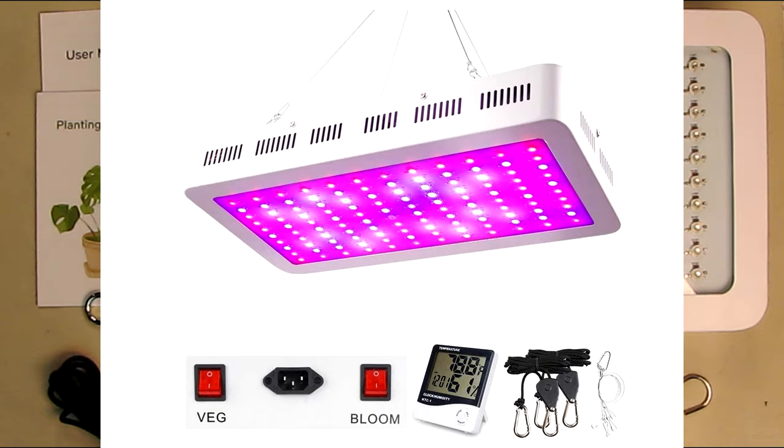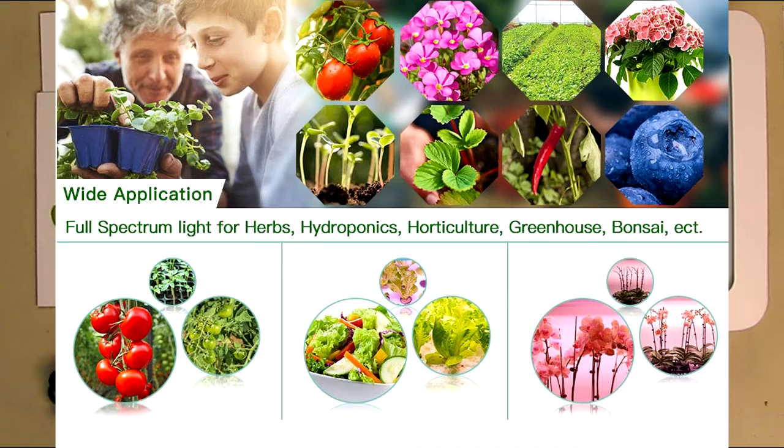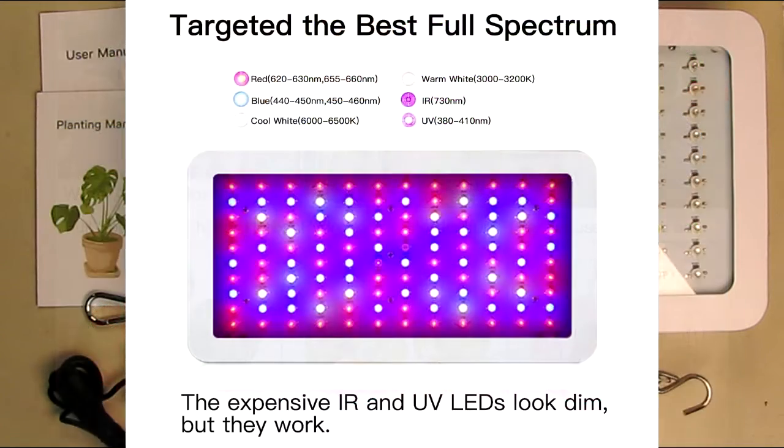It has an adjustable full-spectrum dual switch plant light. It'll do veggie and bloom button and powerful heat dissipation system for indoor plants, vegetables, and flowers.